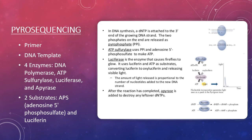Luciferase is the enzyme that causes fireflies to glow. It uses luciferin and ATP as substrates, converting luciferin to oxyluciferin and releasing visible light. The amount of light released is proportional to the number of nucleotides added to the new DNA strand. After the reaction has completed, APRase is added to destroy any leftover DNTPs.